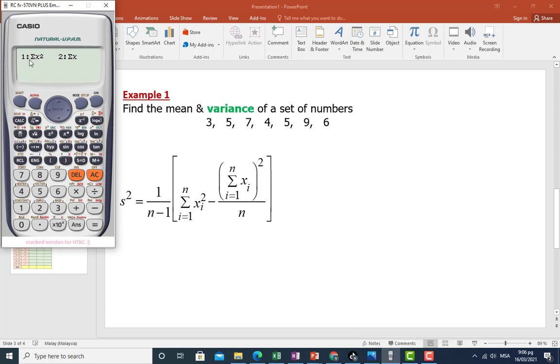And choose 1 for the summation of X square. Equal. Now the summation of X square is 241.